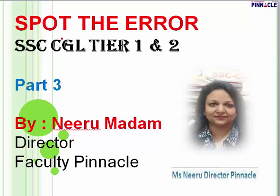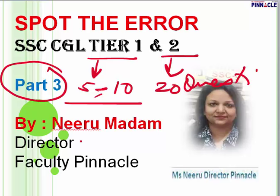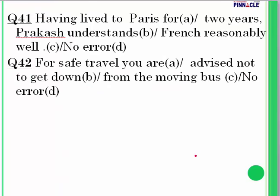Welcome to Pinnacle Online Coaching Classes. We are doing 'Spot the Error in the Sentence.' You have questions from this in SSC CGL Tier 1 as well as Tier 2. In Tier 1, questions range from five to ten; in Tier 2, you will have 20 questions from spot the error. This is part three, covering question number 41 to 60. We have already done part one and part two.